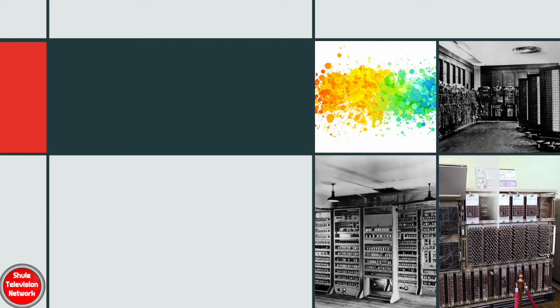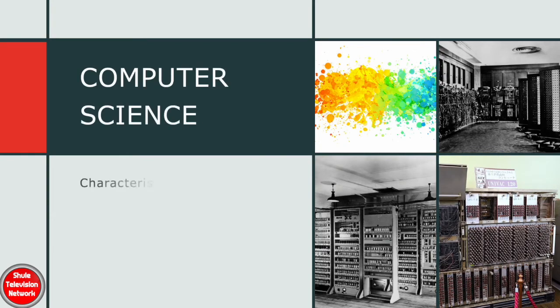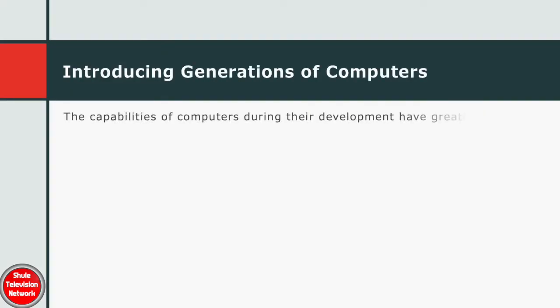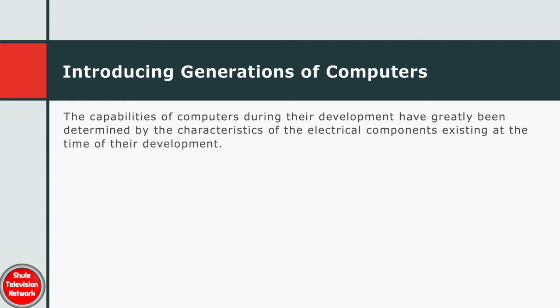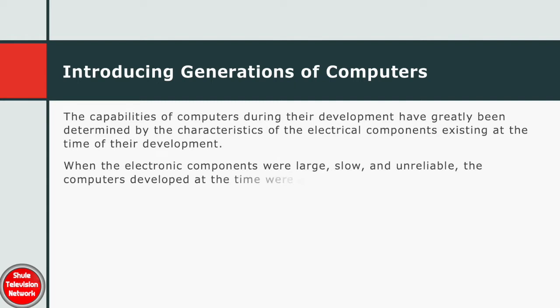In this lesson we will discuss the characteristics of first-generation computers. The capabilities of computers during their development have greatly been determined by the characteristics of the electrical components existing at the time of their development. When the electronic components were large, slow and unreliable, the computers developed at the time were also large, slow and unreliable.